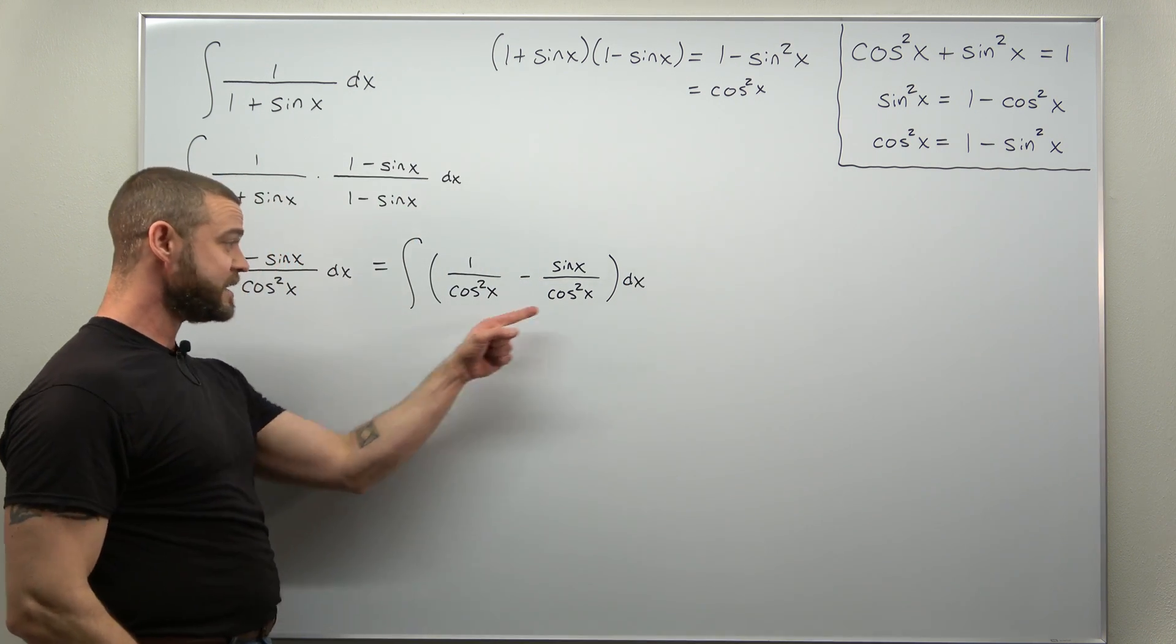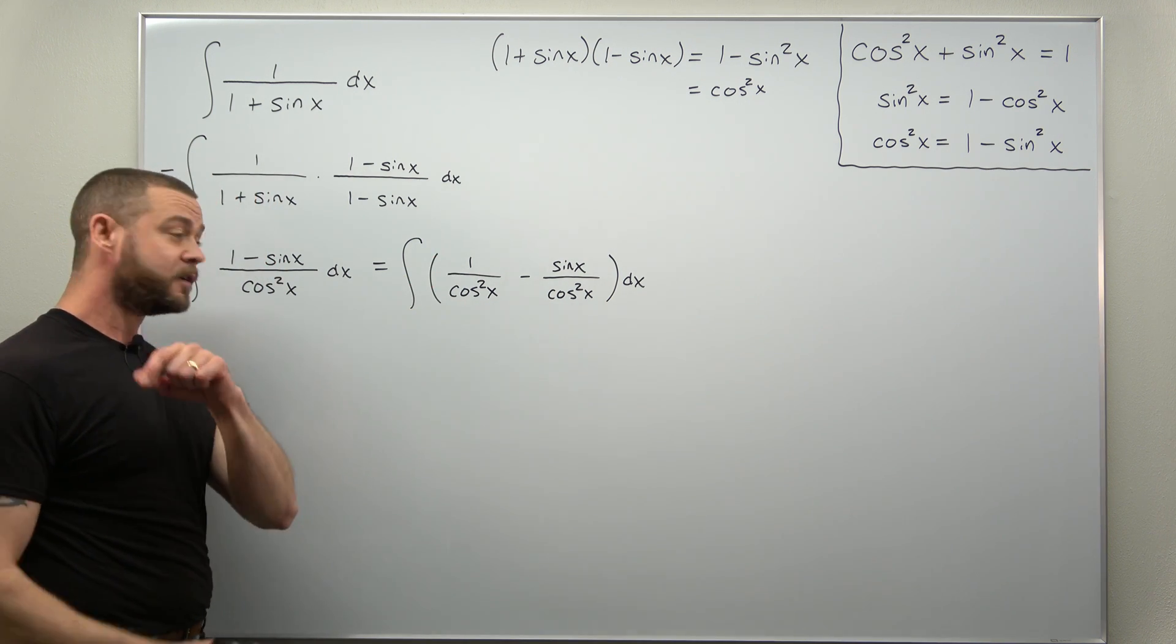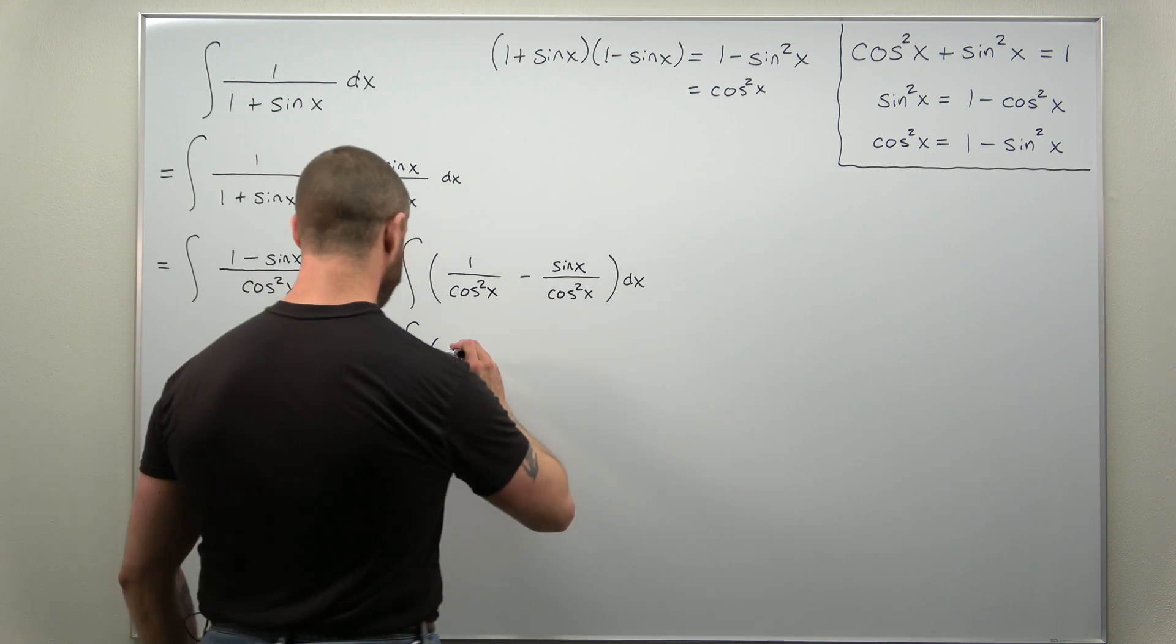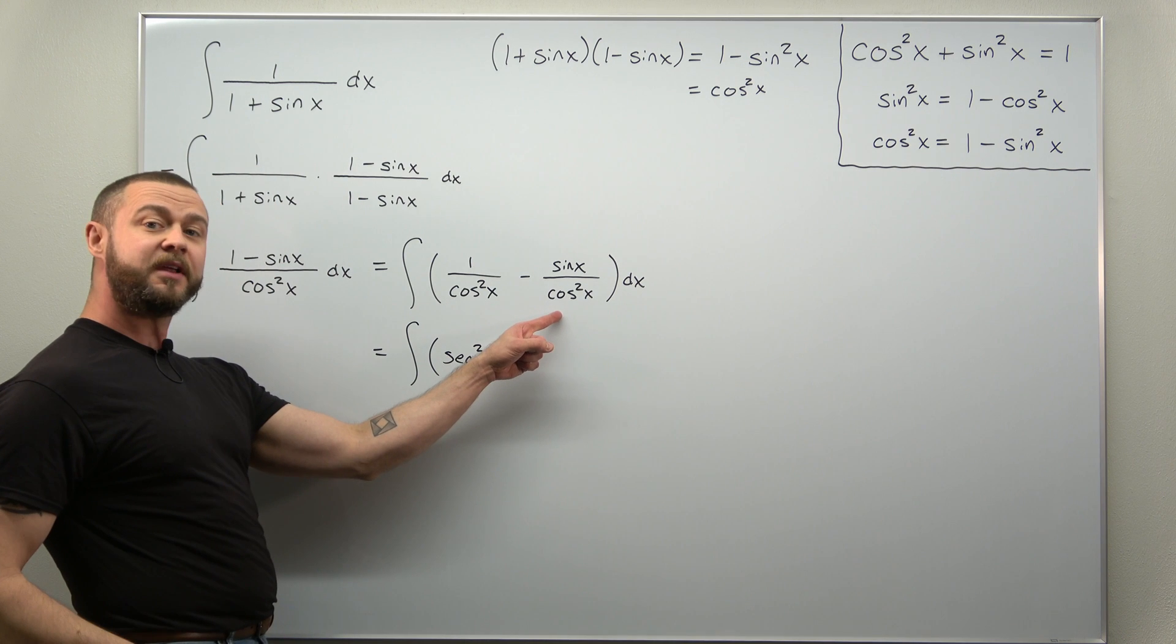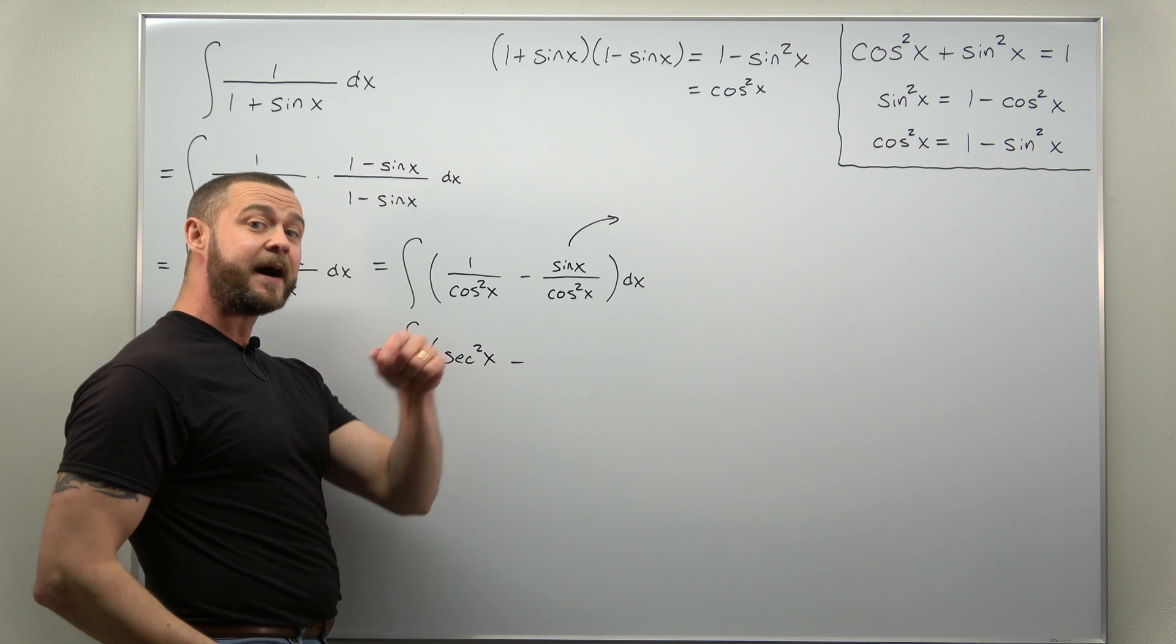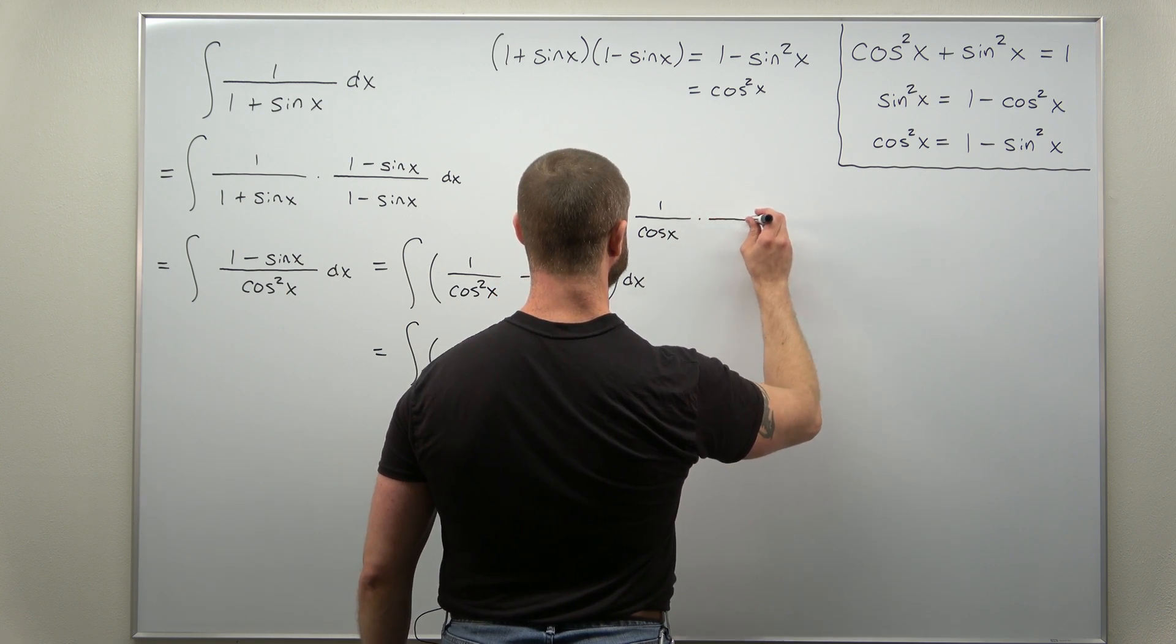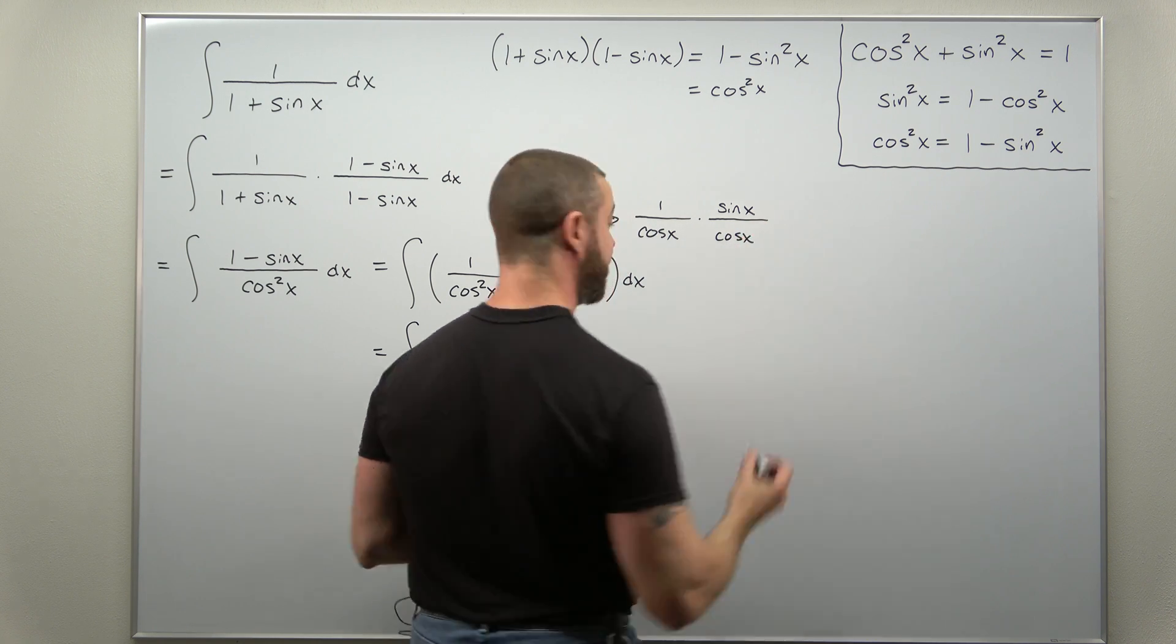Now what we can do is rewrite each of those as other trig functions. One over cosine squared, that's easy to rewrite. That just becomes secant squared. And we're going to split this fraction apart. We're going to think of sine of x divided by cosine squared of x as one over cosine of x times sine of x divided by cosine of x.